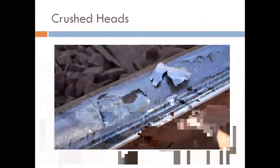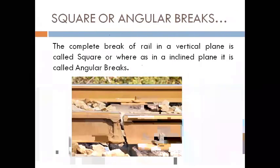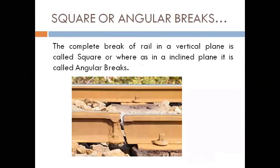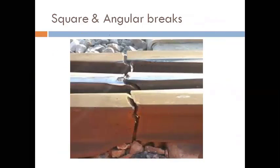Next are square or angular breaks. When there are no intermediate sleepers between two sleepers, the rail gets weakened. When a train moves at high speed, a jerk or crack appears in the rail, which propagates over years and eventually splits the rail into two parts. A complete break in a vertical plane is called a square break, whereas a break in an inclined plane is called an angular break.